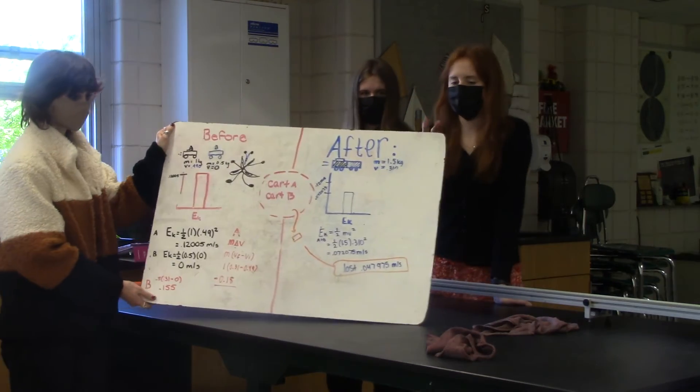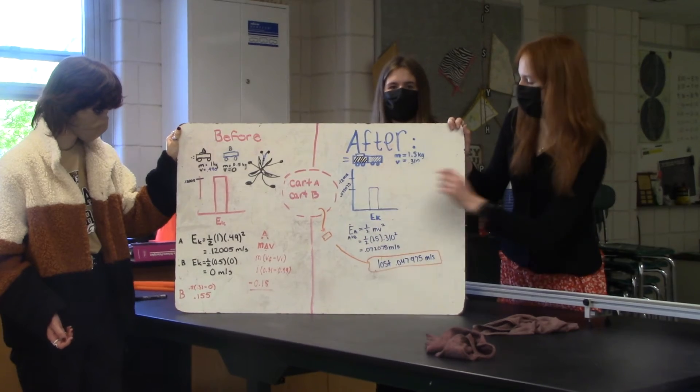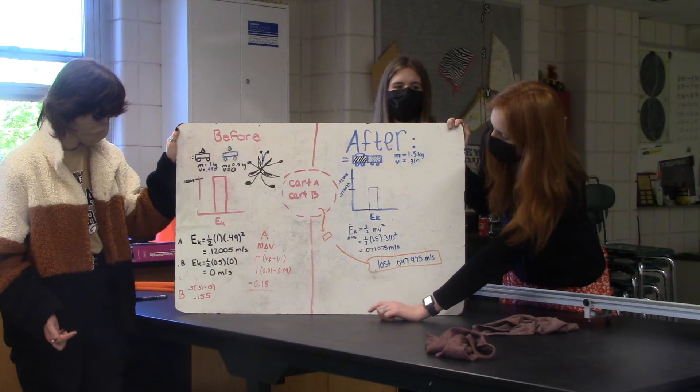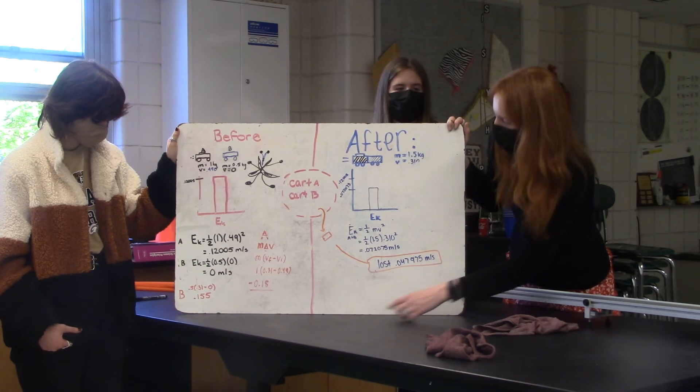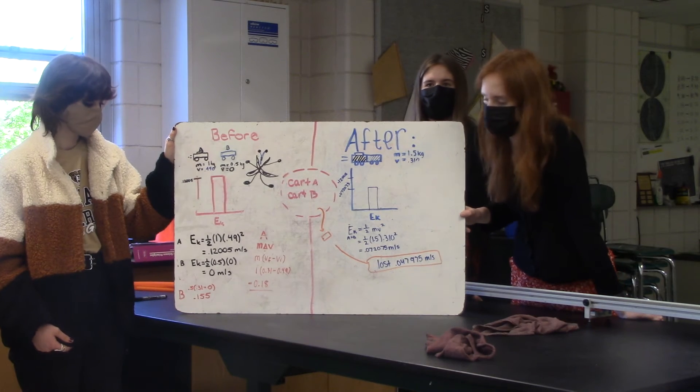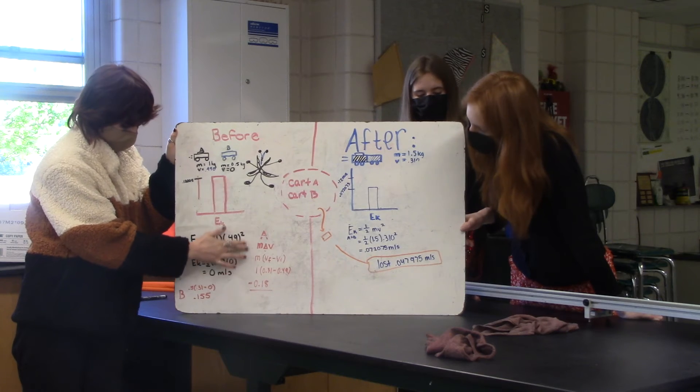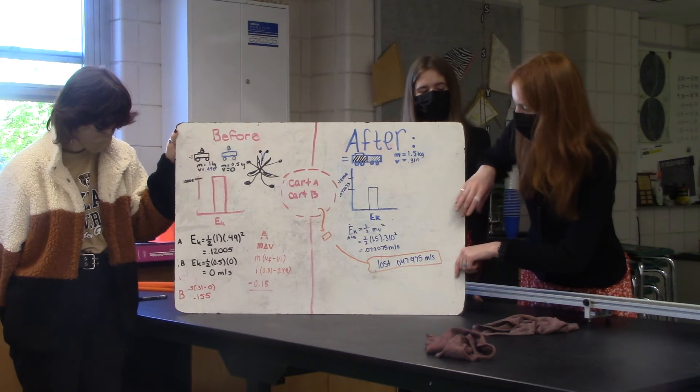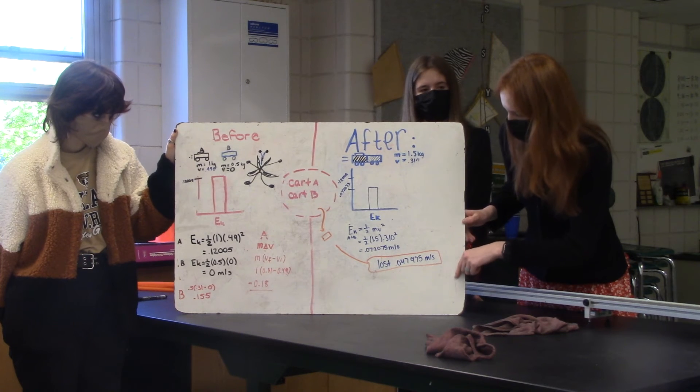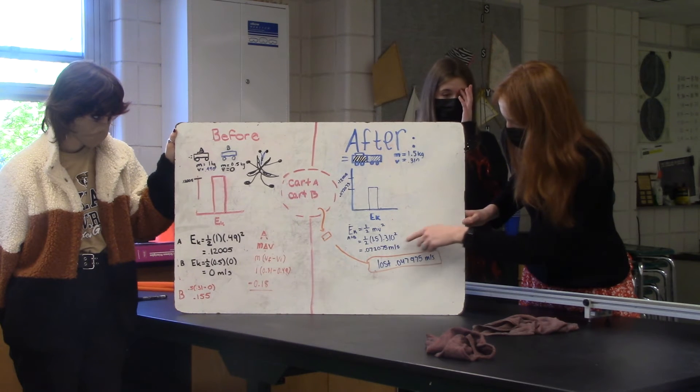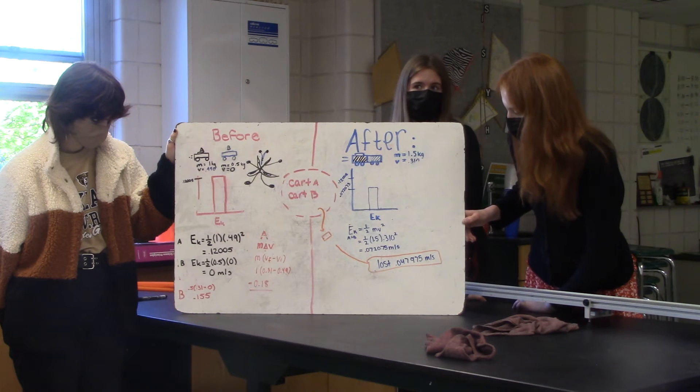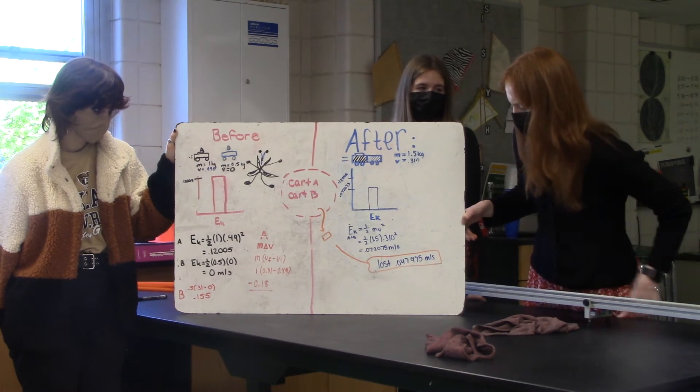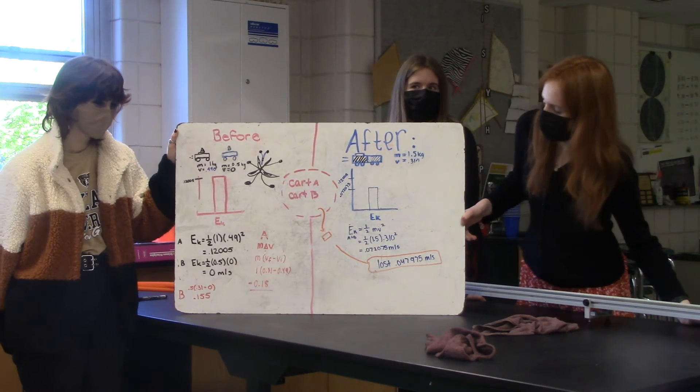This cart has more weight on it because it has a block on it, and then it's pushed into this cart, and they both move. It's using kinetic energy in the beginning, so we used the kinetic energy formula, and we plugged all the numbers we got in, and we got 0.12005 joules. And then to find cart B, it's staying still, so it would be zero. So then it was all kinetic. So then to find it after it hits, we plug in cart B and A, and then we get 0.072075 joules, and we found out that we lost some energy, so we must have lost it to thermal. So we subtracted that, and we got 0.047975 joules.